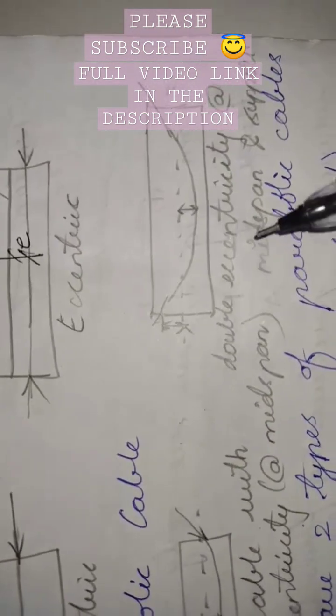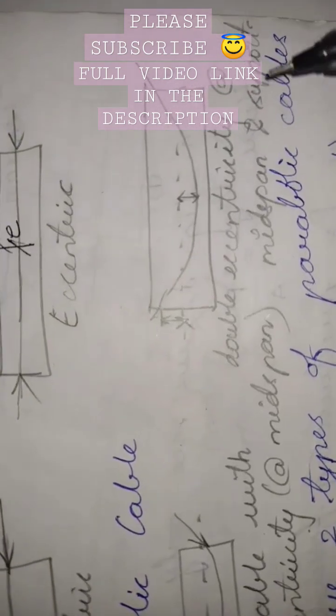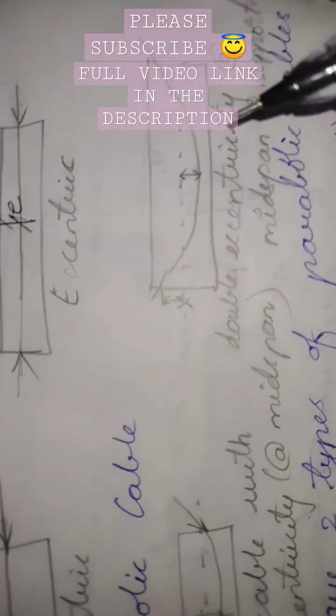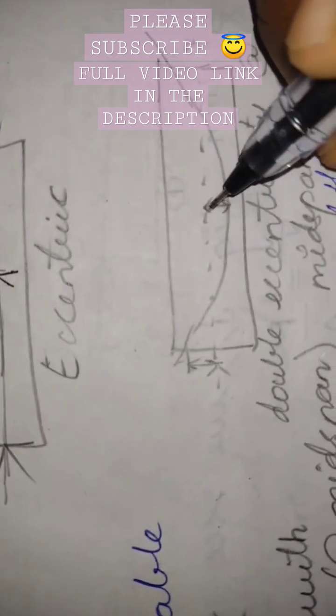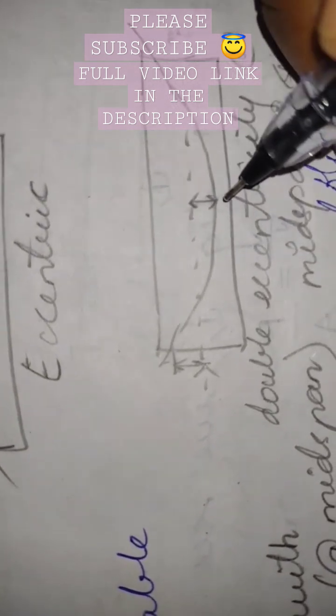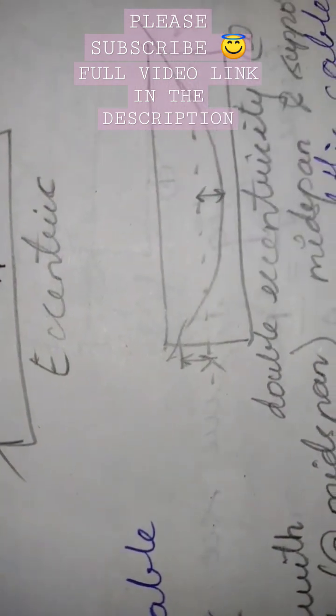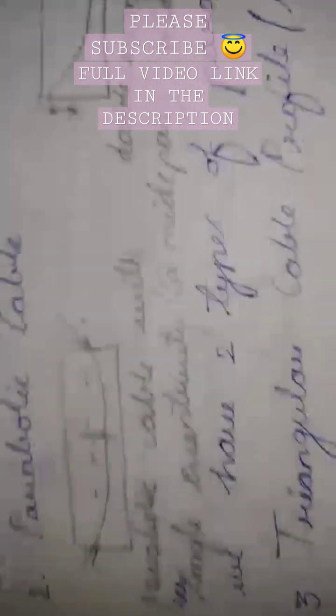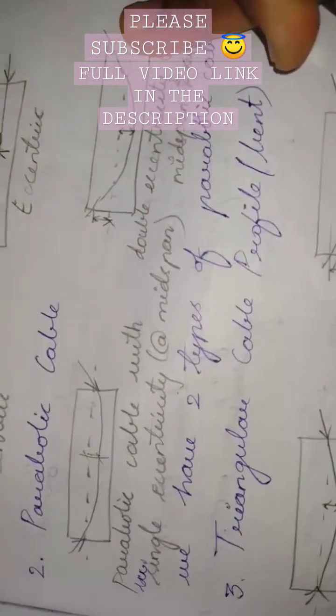When we talk about double eccentricity, it has eccentricity at both mid-span and supports. See here—initially at mid-span it has eccentricity, and also at the supports it has some eccentricity.